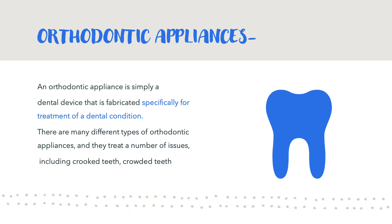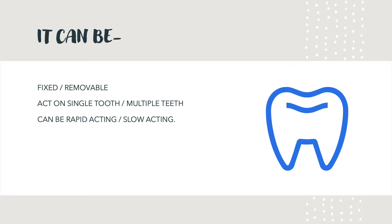There are many types of orthodontic appliances, and that depends upon what kind of problem needs to be solved or what the tooth or teeth condition requires. They can be fixed or removable depending upon the choice of patient and also the need of the situation. They can act on a single tooth or multiple teeth, which also determines the shape of the orthodontic appliance.